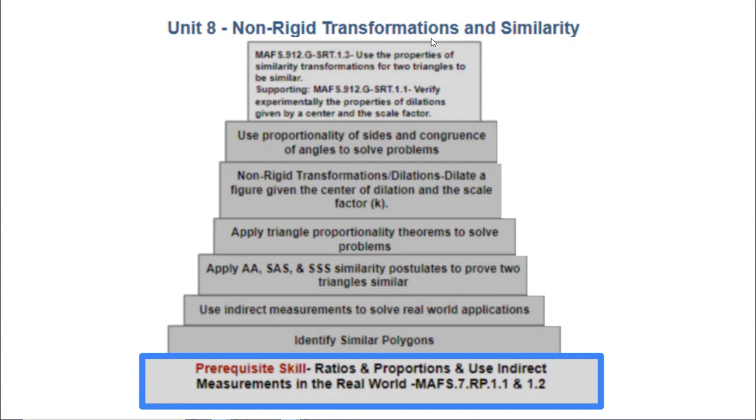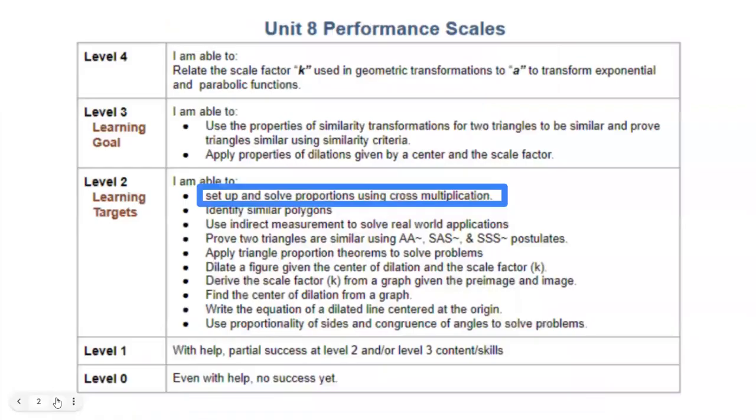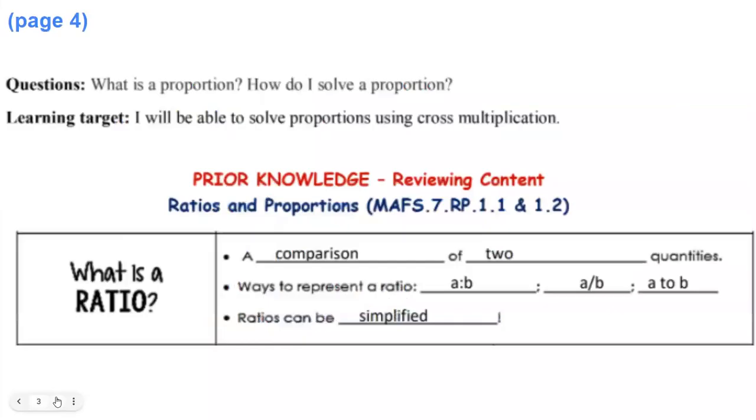We are starting off with a quick review on proportions, with what they are, how they work, and how we solve them. So in page four of your new packet, you can see all about proportions here. Proportions are two ratios. We're going to talk about ratios first. A ratio is a comparison of two quantities. You can represent it with a colon, a to b, with a slash like a fraction a to b, or just literally saying a to b. You can simplify ratios and we do so quite a bit.